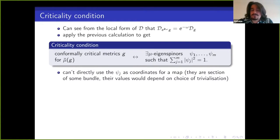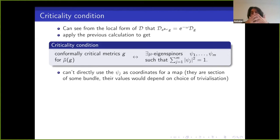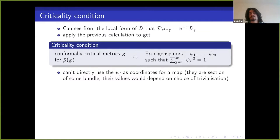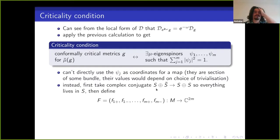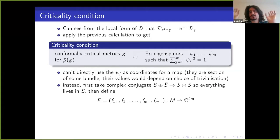However, we cannot give the same interpretation as in the Laplace case by using the ψ_j directly as coordinates of a map, because spinors are sections of the spinor bundle — their values depend on the choice of trivialization of the bundle. You're not sure that going around a loop would close up the map. Instead, you do a trick: since spinors live in S ⊕ S̄, you take the complex conjugate of the second coordinate to work in S ⊕ S, so both coordinates live in the same bundle.